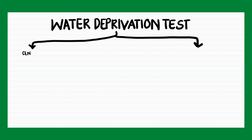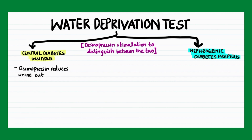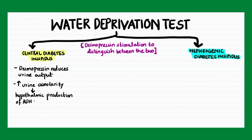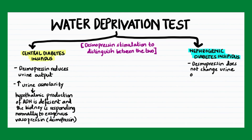Water deprivation tests can also help distinguish between central and nephrogenic diabetes insipidus using desmopressin stimulation. Desmopressin is a vasopressin analog which functions to conserve water. Administering desmopressin in central diabetes insipidus reduces urine output and increases urine osmolality, since hypothalamic production of antidiuretic hormone is deficient and the kidney is responding normally to exogenous vasopressin. In nephrogenic diabetes insipidus, desmopressin does not change urine output or osmolarity since endogenous vasopressin levels are already high.